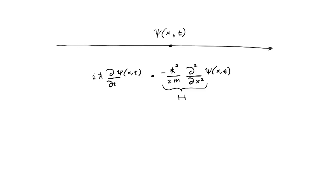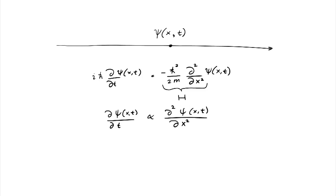If we step away a little and don't worry about all the constants, what Schrödinger's equation for this free particle is saying is: dψ(x,t)/dt is proportional to d²ψ(x,t)/dx². The time derivative is proportional to the second derivative with respect to x.